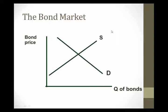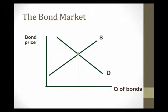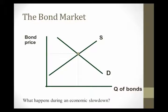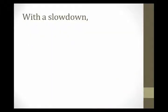So we start with a typical bond market diagram. Supply and demand intersect and imply an equilibrium bond price, interest rate, and an equilibrium quantity of bonds. If economic conditions change, we would see this diagram change as well. During an economic slowdown, we would expect changes in bond supply and bond demand as borrowers and lenders react to changing economic conditions.